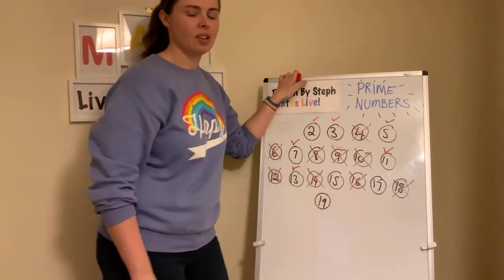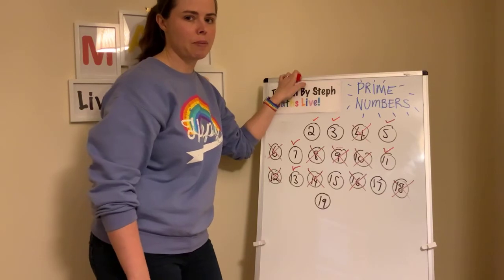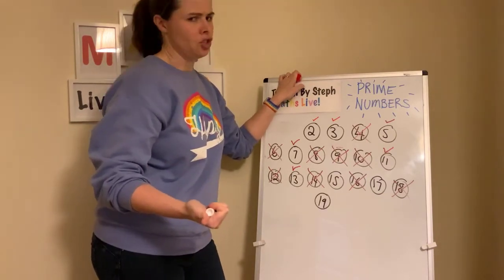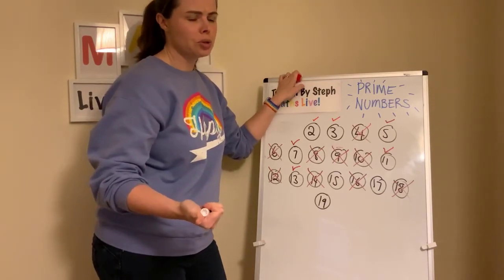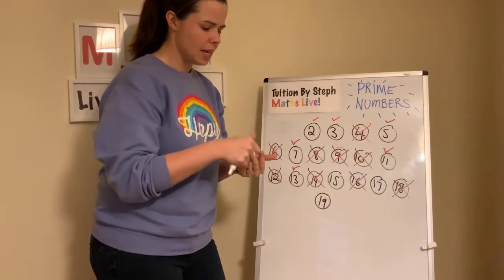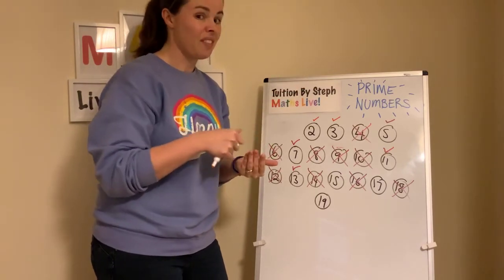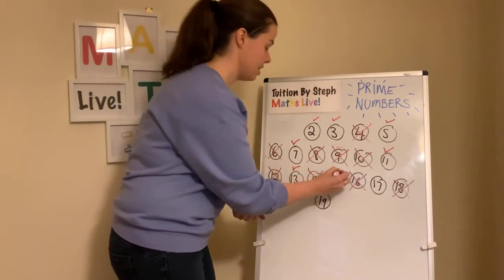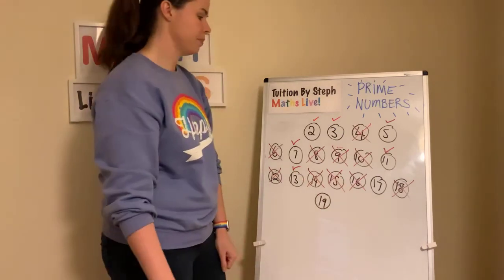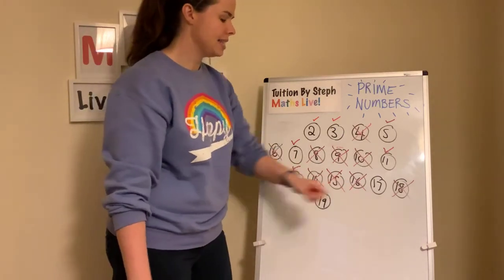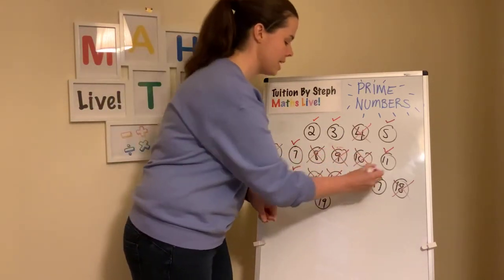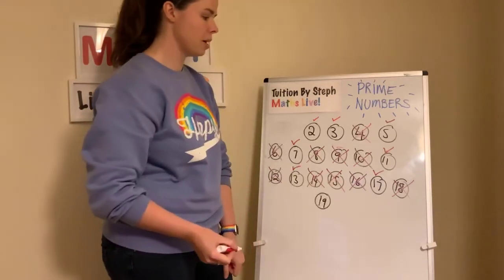Fifteen: is fifteen a prime number? It's in the ones and the fifteens — it's not in the twos. Threes: three, six, nine, twelve, fifteen — it is in the threes, so it's not a prime number. Seventeen: if you put seventeen, you are correct — it is a prime number.